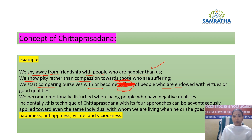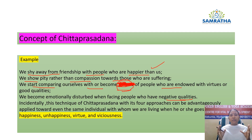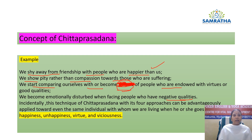The fourth wrong behavior: we become emotionally disturbed when facing people who have negative qualities. We should not become emotionally imbalanced when we are surrounded by people with negative qualities. We have to maintain a sense of peace and calmness; we should not let negative things or negative people affect us.